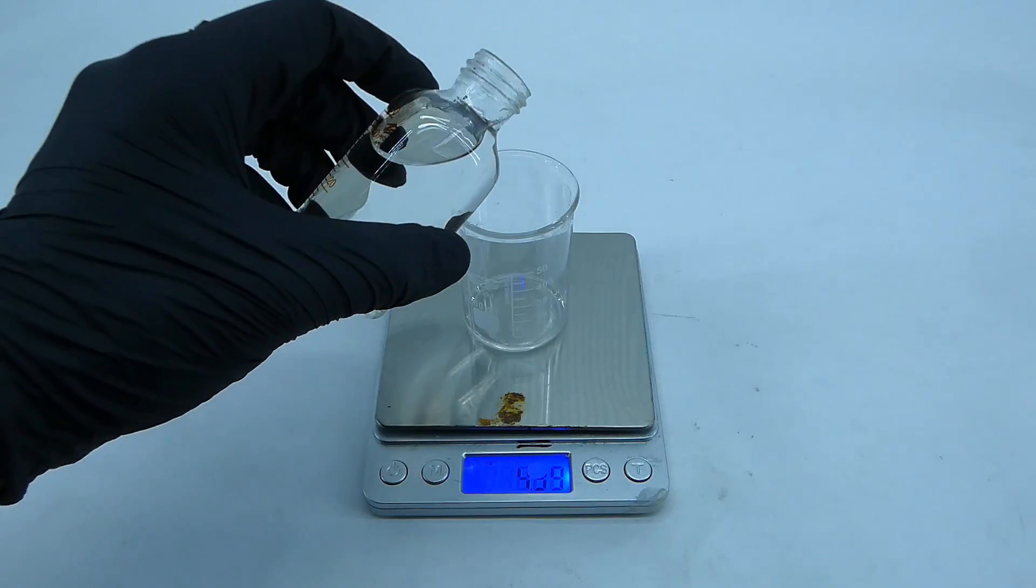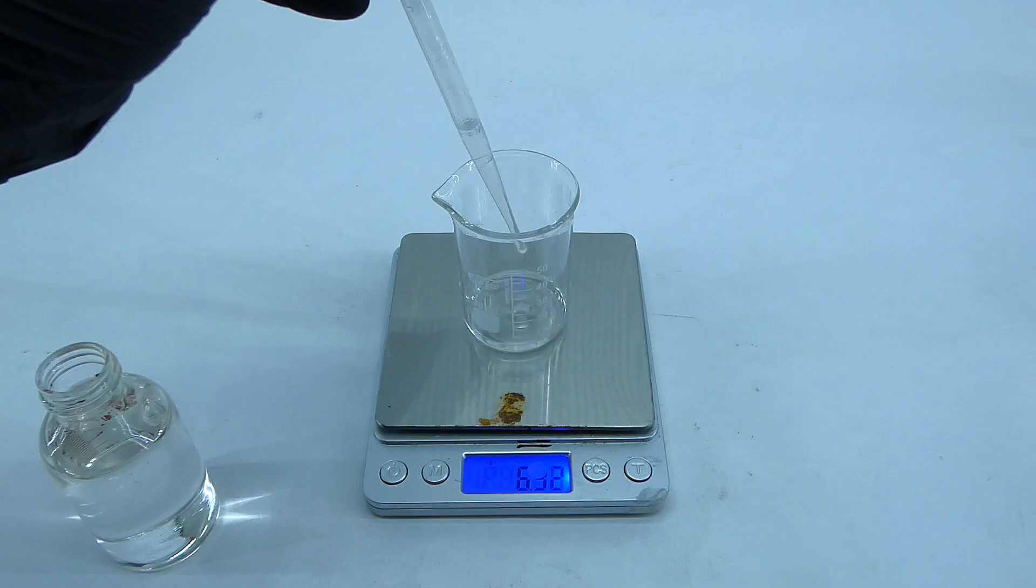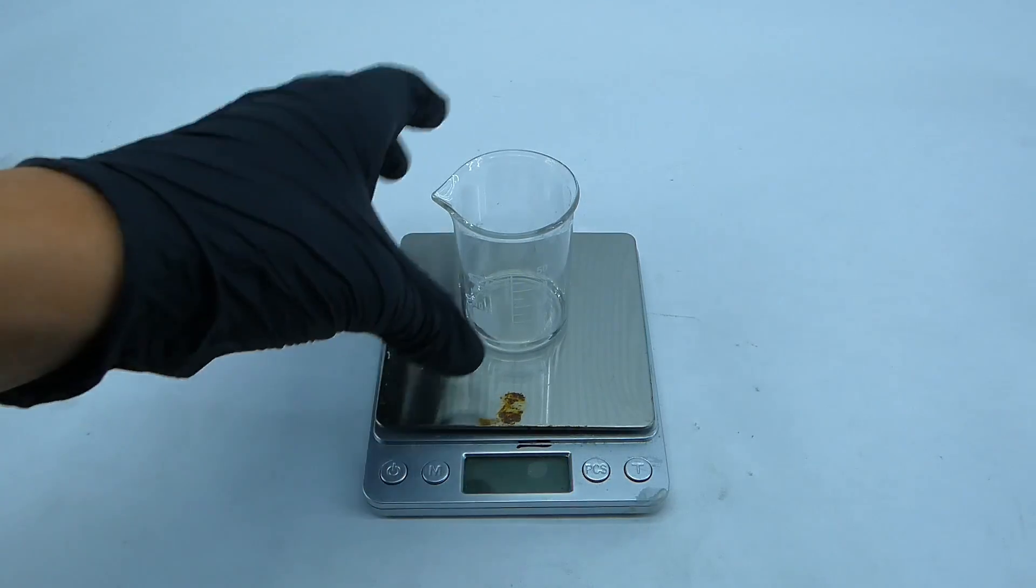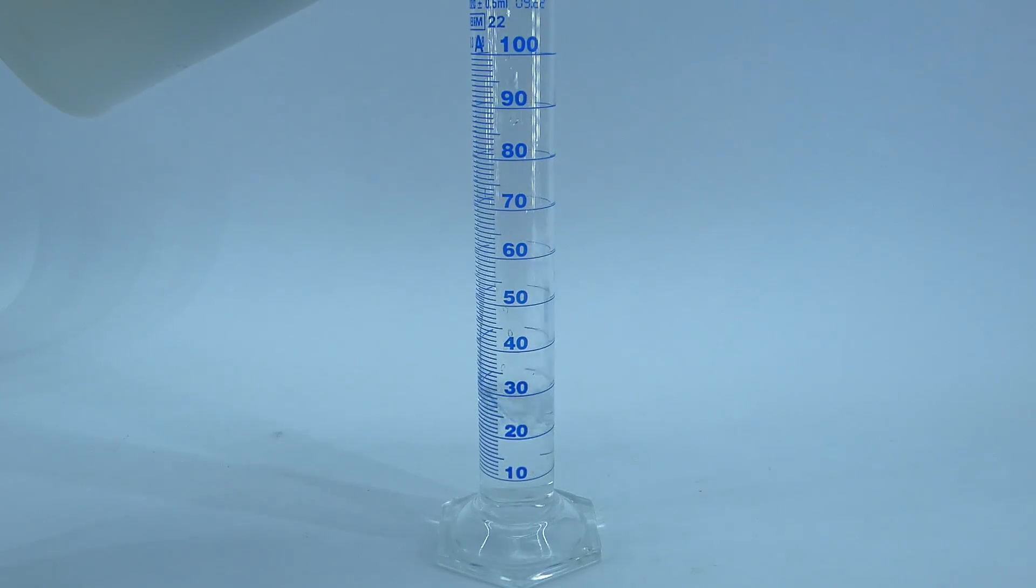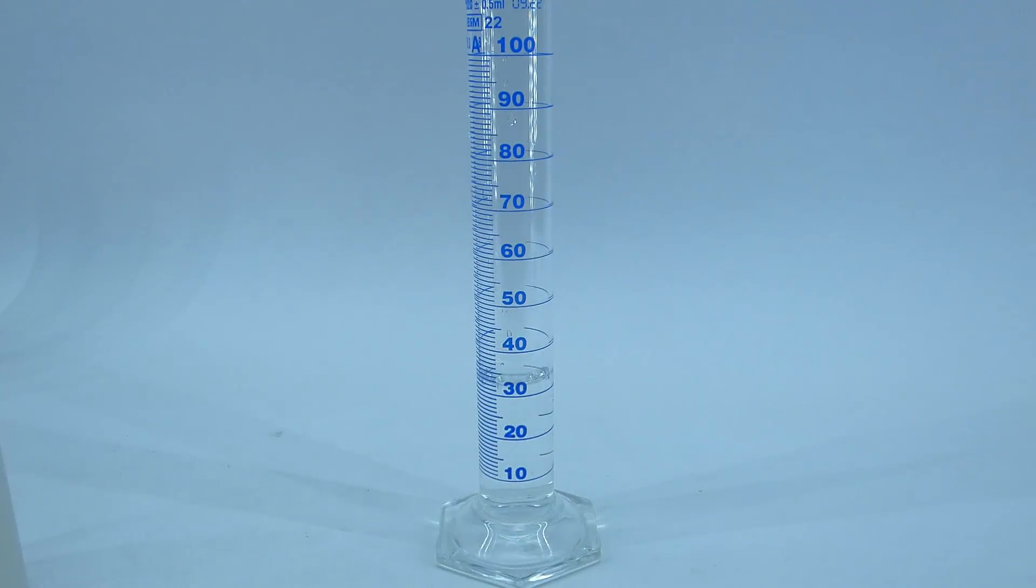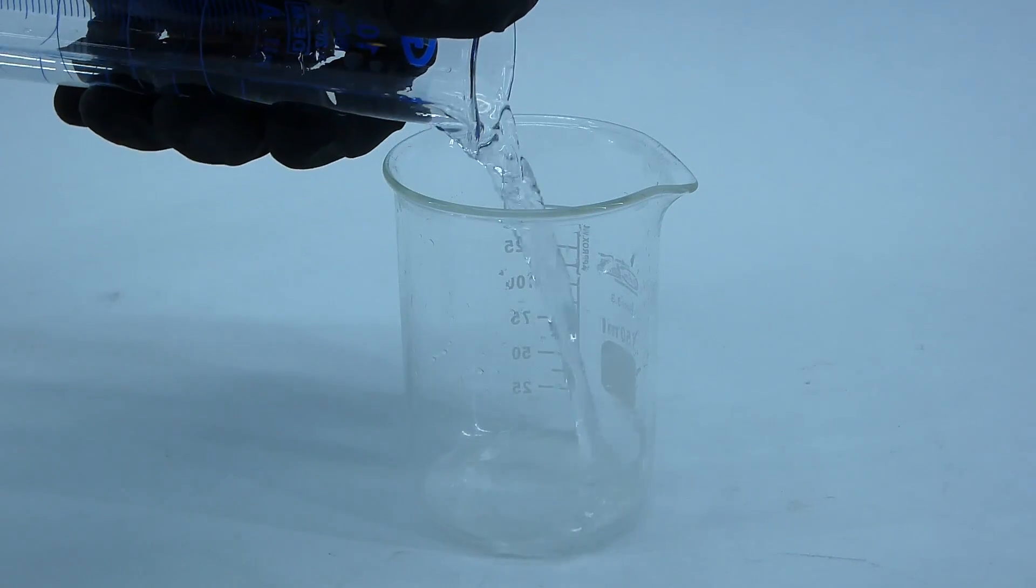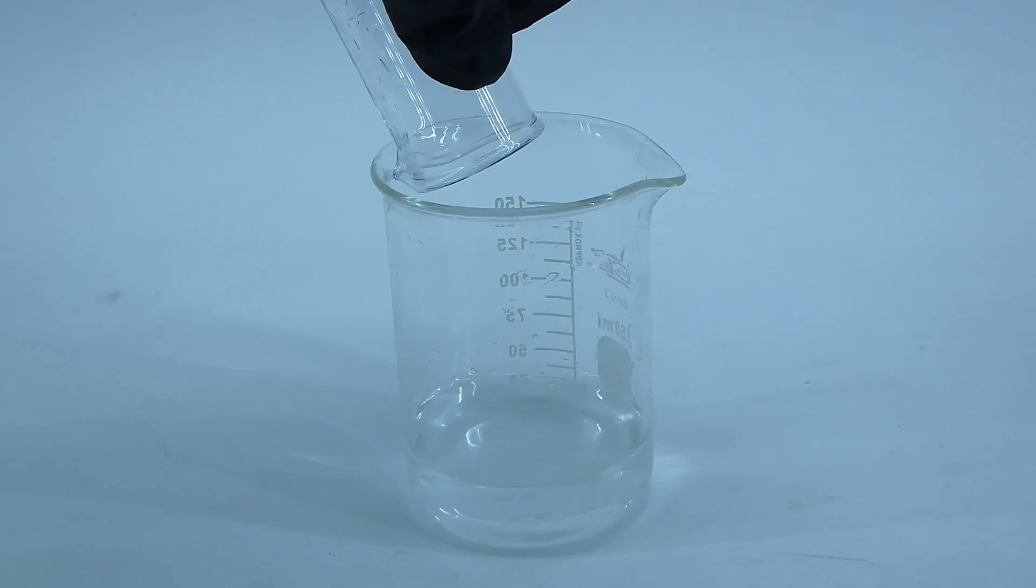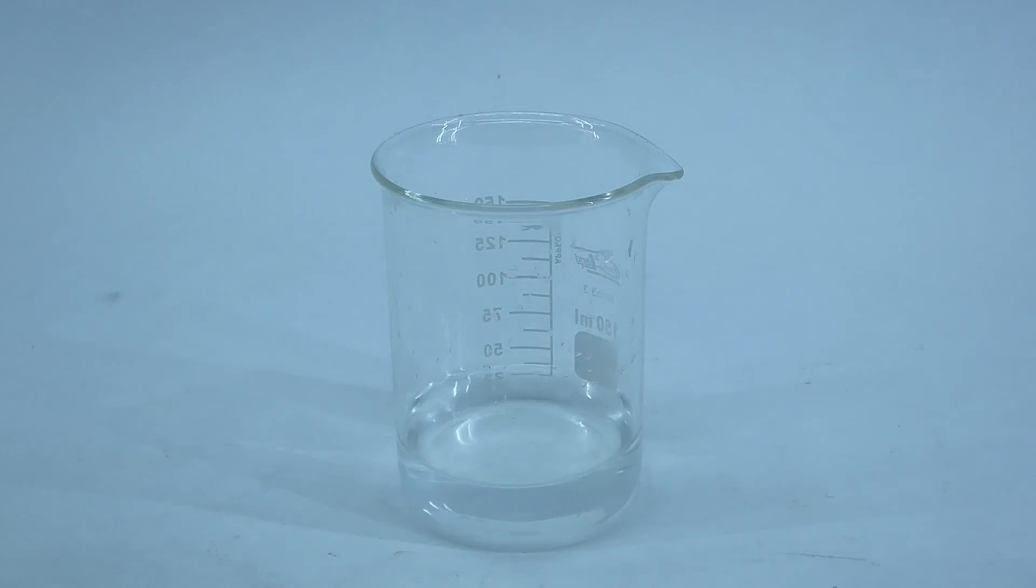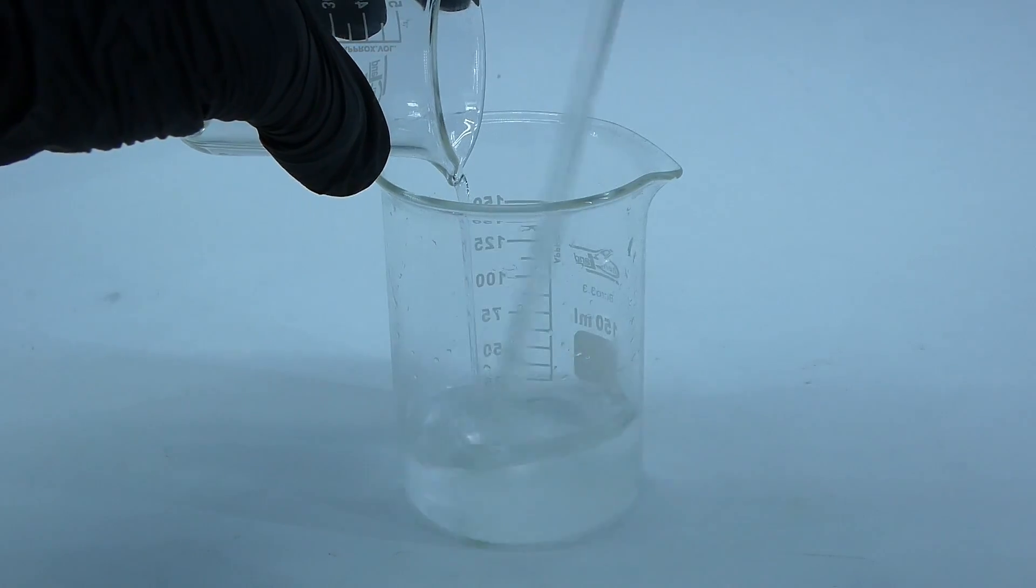Anyway, I weighed out 7.5 grams of 96% sulfuric acid, and after that was done, I measured out around 37 ml of distilled water. Now it was time to add it into the sulfuric acid. I could add the water into the sulfuric acid directly, but I wanted to avoid the risk of boiling the acid and people yelling at me in the comments, so I poured the water into a larger beaker, and then, under strong stirring, I slowly added the sulfuric acid.